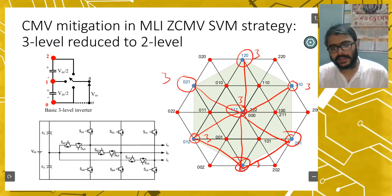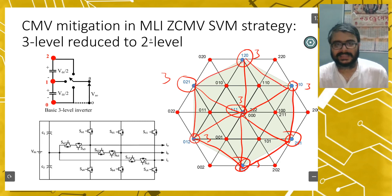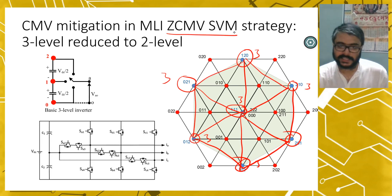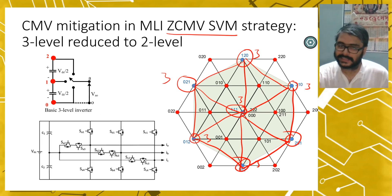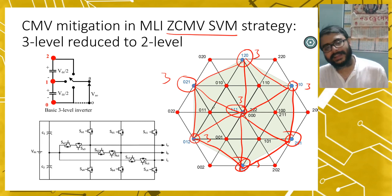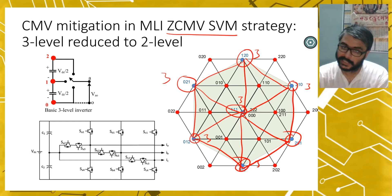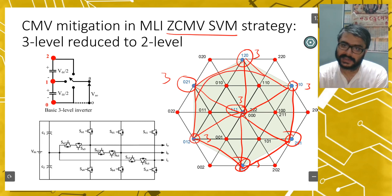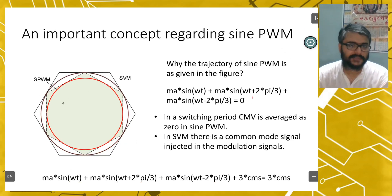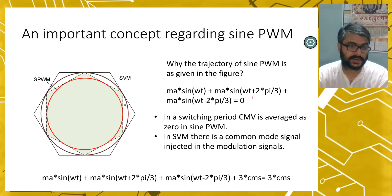This strategy is called zero common mode voltage space vector modulation, or ZCMVSVM. When applied to a three-level inverter, the usable hexagon becomes an inverted hexagon and effectively becomes like a two-level hexagon — a three-level inverter behaves like a two-level inverter. The drawback is that the range of linear modulation index also reduces, because the maximum inscribable circle is smaller.